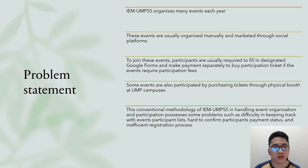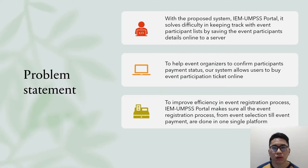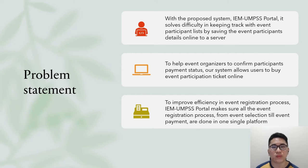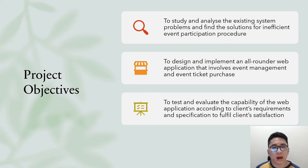Problems include difficulty in keeping track of events and participant lists, hard to confirm participants' payment status, and inefficient registration processes. With the proposed IEM-UNPSS portal, it solves difficulty in keeping track of event participant lists by saving participants' details online to a server. Our system allows users to buy event participation tickets online to help confirm payment status. The portal ensures all event registration processes from event selection to payment are done on one single platform.